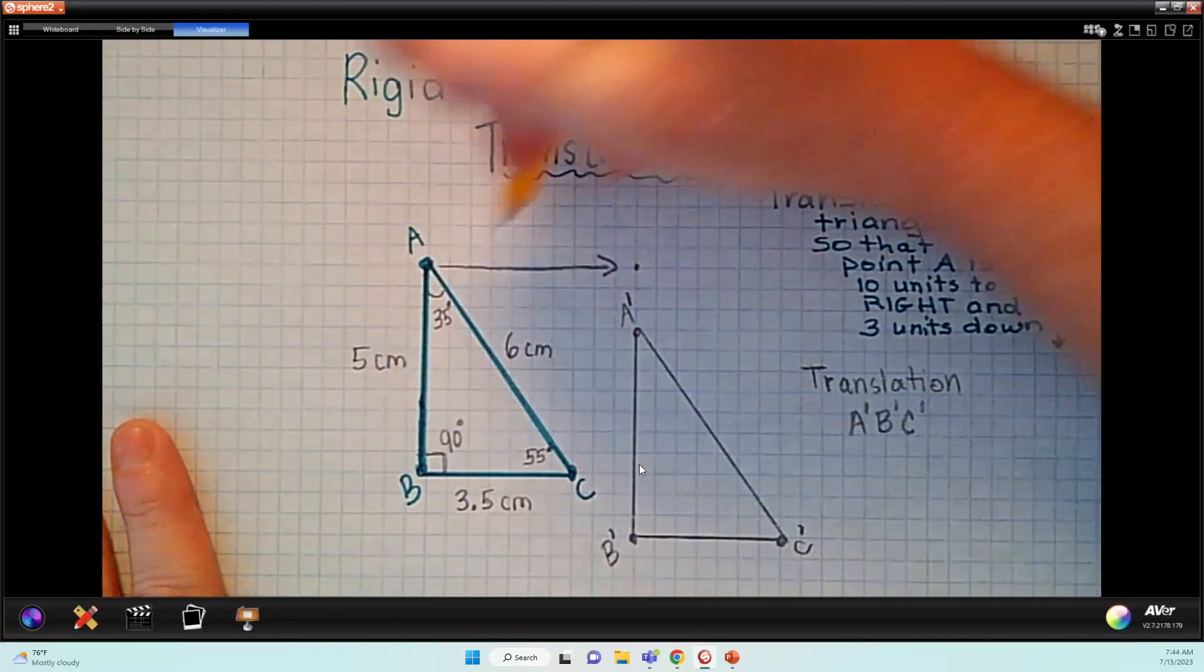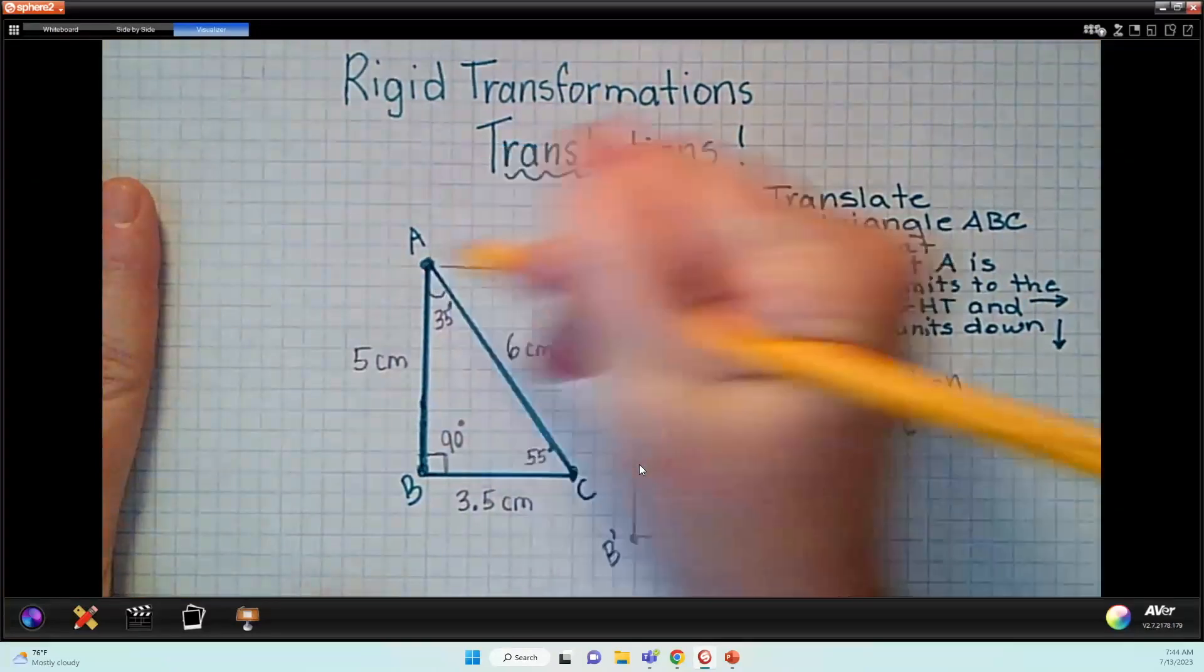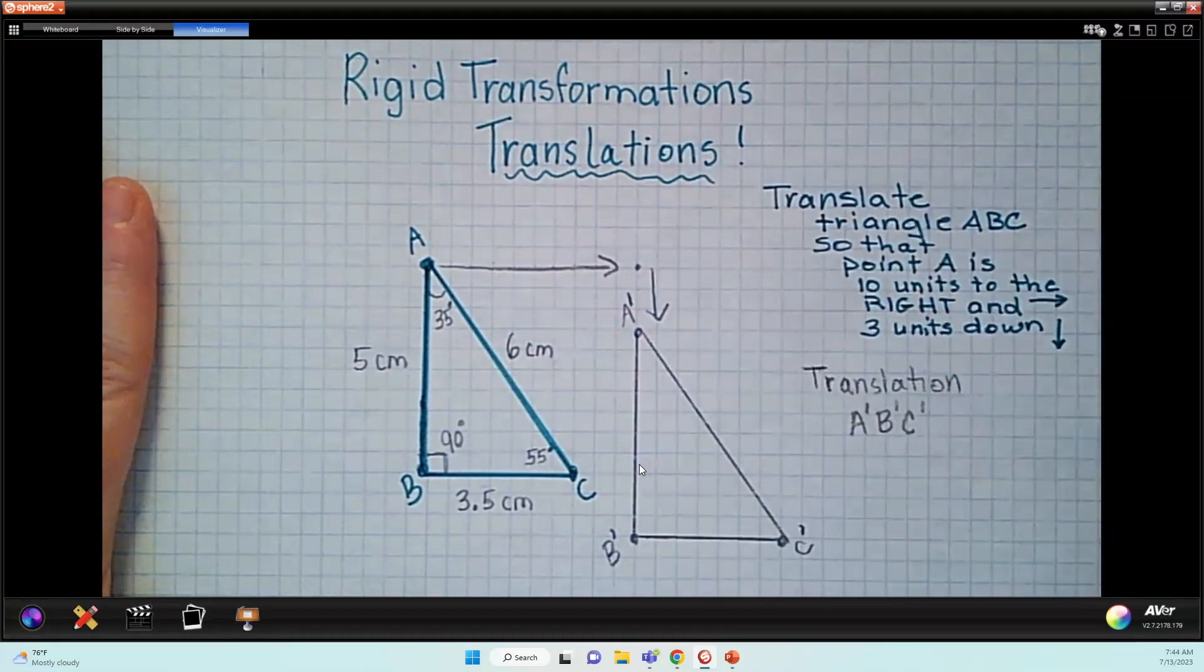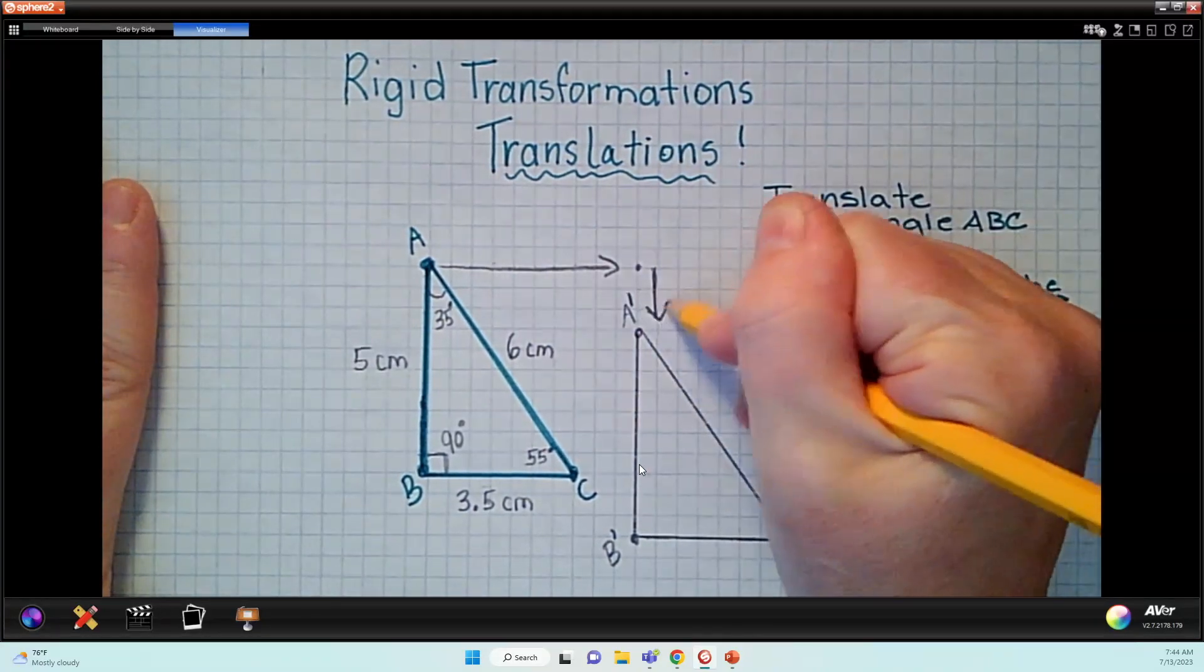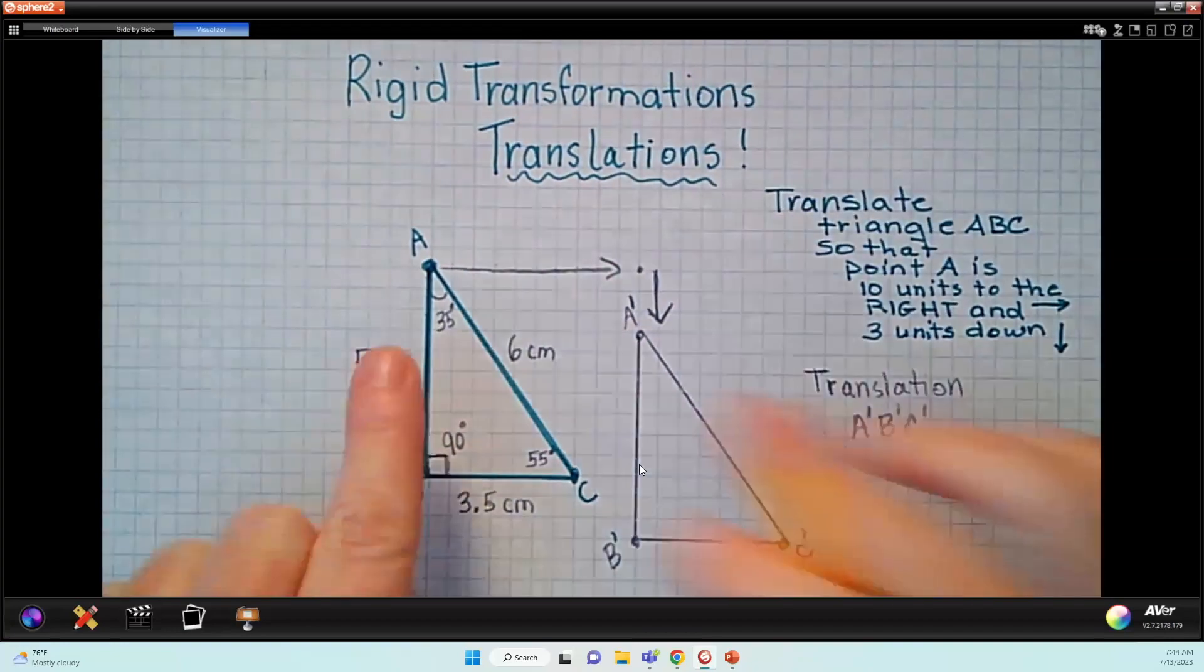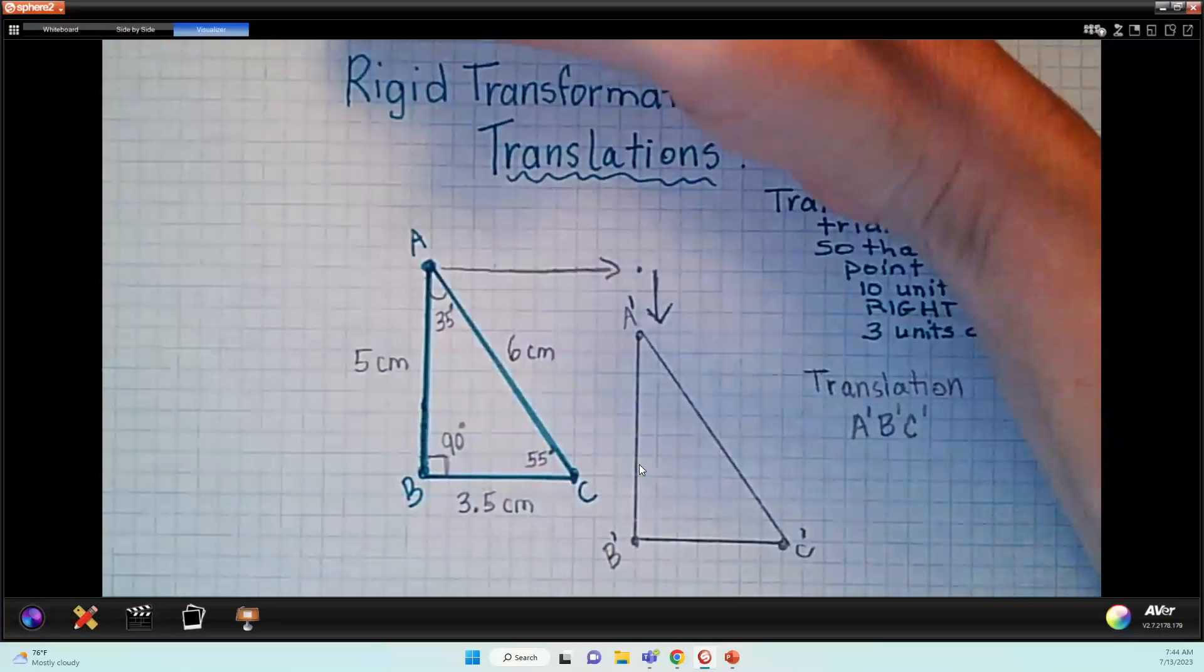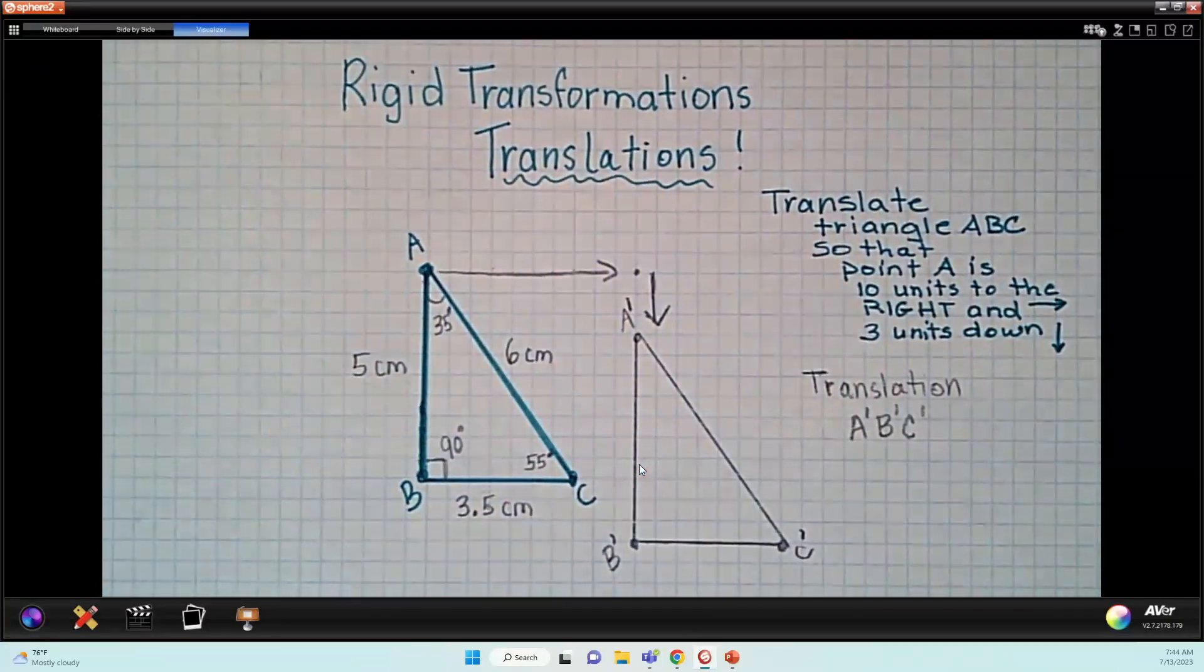So when we're translating, all we're doing is moving, and we use the term move along a vector. So what that means, the vector is just that arrow, that location. We're taking from A to this point and then from this point down. So when we are doing translations, we do want to be careful. We're not doing diagonal moves. We're following a grid. So it's going to be either to the right or to the left, up or down. That is translations.